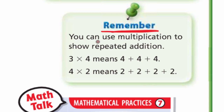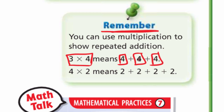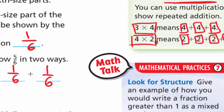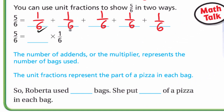We can use multiplication to show repeated addition. For example, 3 × 4 is the same as 4 + 4 + 4, and 4 × 2 means 2 added four times: 2 + 2 + 2 + 2. Looking at our fraction, 1/6 is added five times, which means 5 × (1/6).